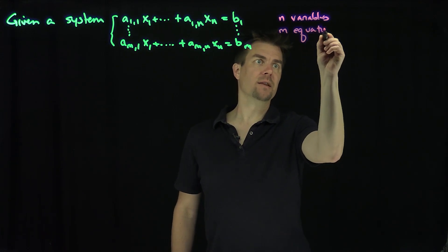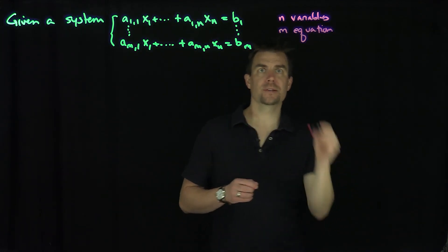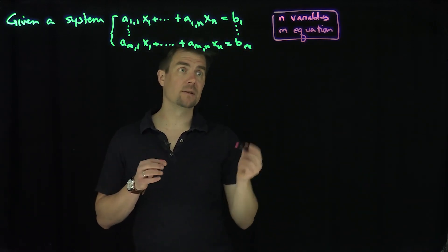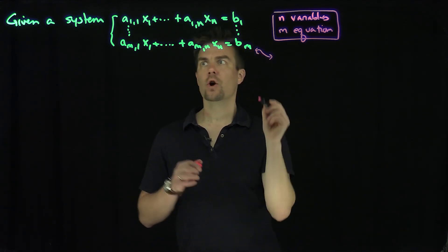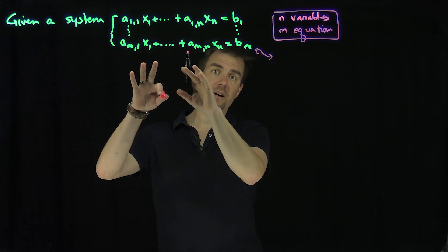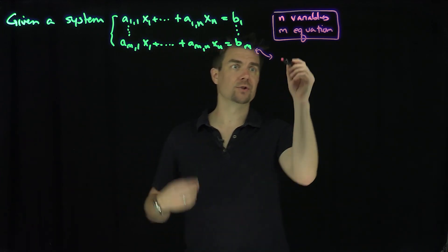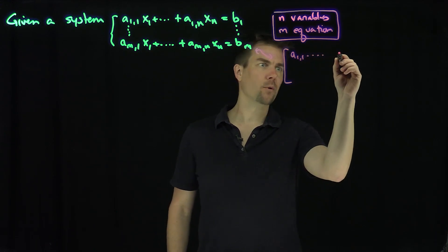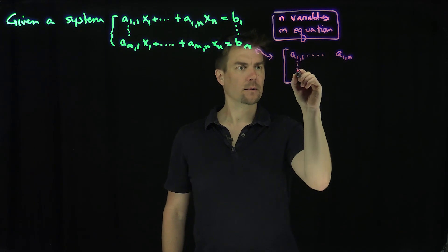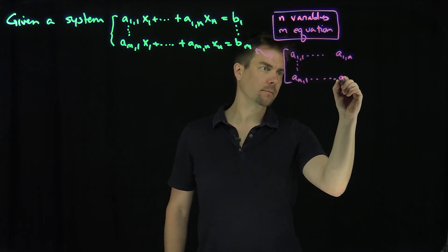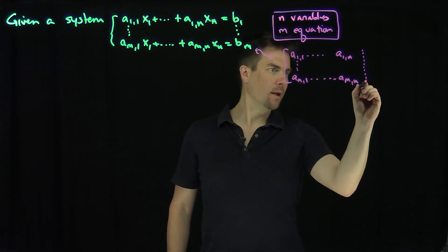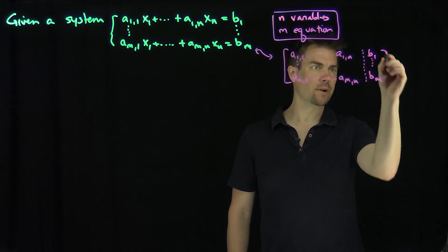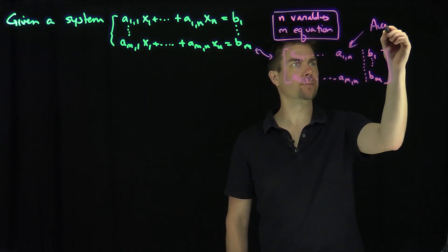So we have n variables and m equations — that's always an important observation to keep in the back of our mind. Let's associate to this system an augmented matrix. The augmented matrix just forgets about the variables x1 through xn and stores all the coefficients into a matrix: a11 through a1n, am1 through amn, and then past the equal sign we put a dotted line and store the coefficients b1 through bm. This is called the augmented matrix that corresponds to the system.